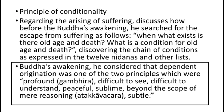After achieving awakening or enlightenment, Buddha also realized that dependent origination and causation, as phenomena, present us with two principles. The first is gambhīra, which means difficult to see, difficult to understand, and difficult to observe — actually beyond the scope of ordinary reason.